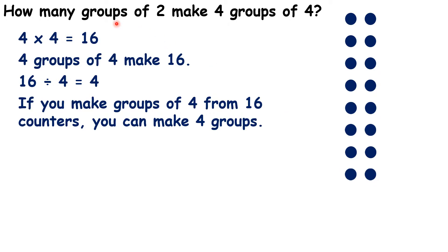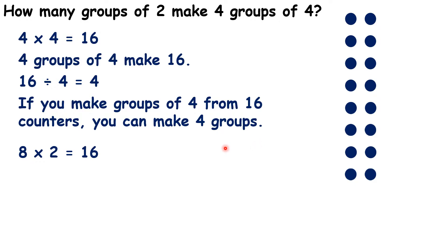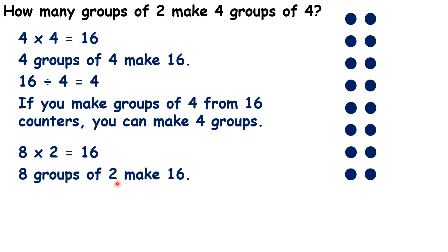So, how many groups of two have we made? We can count: one, two, three, four, five, six, seven, eight groups. So we can answer our question — eight groups of two make four groups of four. We still have 16 counters, but now we've rearranged them into eight groups of two.